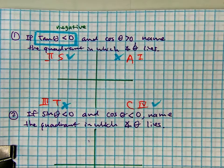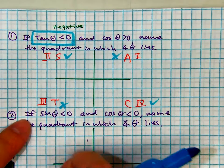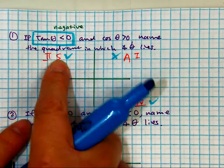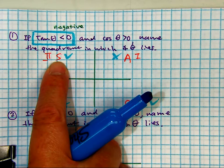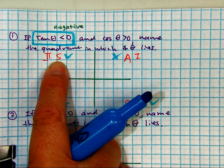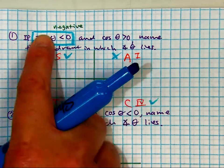So the acronym, if you weren't here yesterday, all students take calculus, tells us where they're positive. Sine is positive here and its reciprocal. What's its reciprocal, class? Cosecant. That means all the other four trig functions are negative, including tangent.